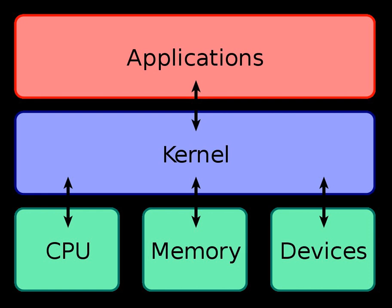In a minimal microkernel, just some very basic policies are included, and its mechanisms allow what is running on top of the kernel — the remaining part of the operating system and other applications — to decide which policies to adopt, such as memory management, high-level process scheduling, file system management, etc. A monolithic kernel instead tends to include many policies, therefore restricting the rest of the system to rely on them.